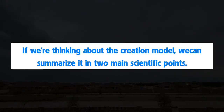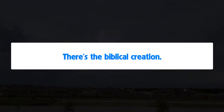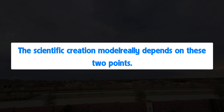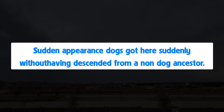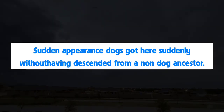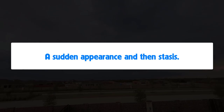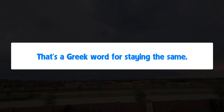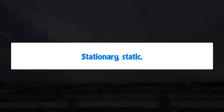If we're thinking about the creation model, we can summarize it in two main scientific points. The scientific creation model really depends on these two points: sudden appearance — dogs got here suddenly without having descended from a non-dog ancestor — and then stasis, a Greek word for staying the same, stationary, static.